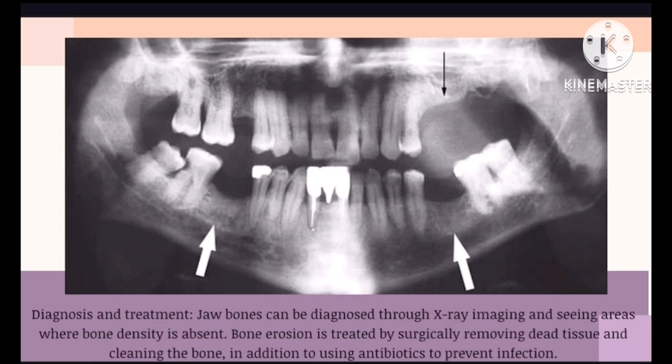Diagnosis and treatment: jaw bone erosion can be diagnosed through X-ray imaging, seeing areas where bone density is absent. It is treated by surgically removing the tissue and debriding the bone, in addition to using antibiotics to prevent infection.